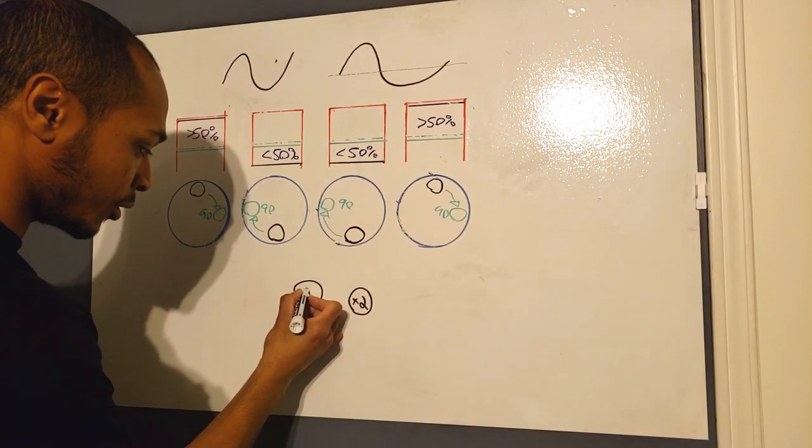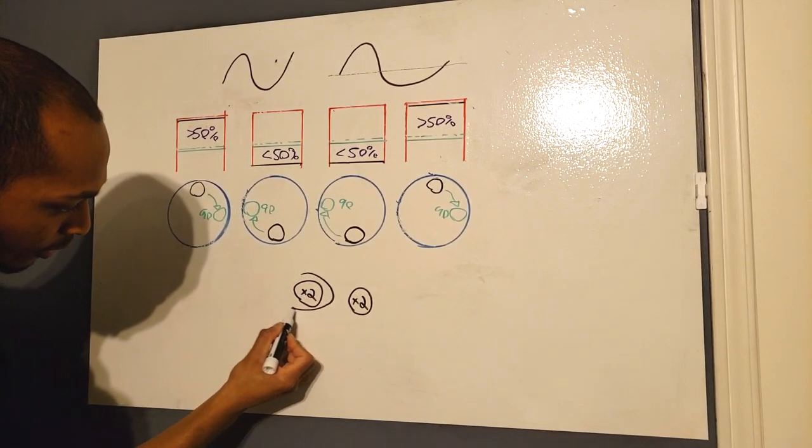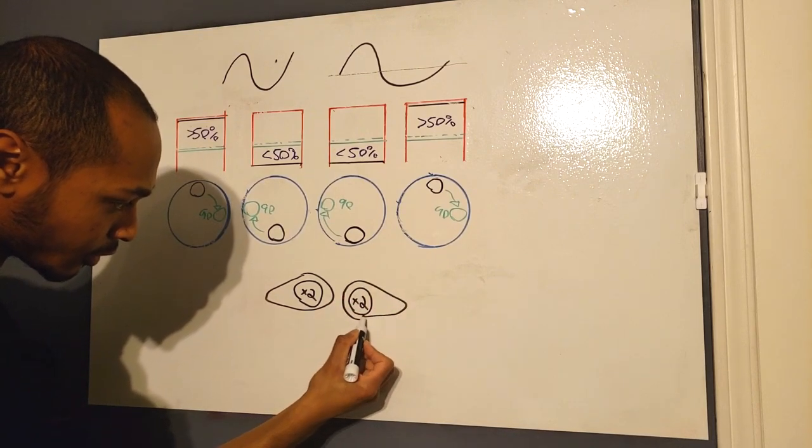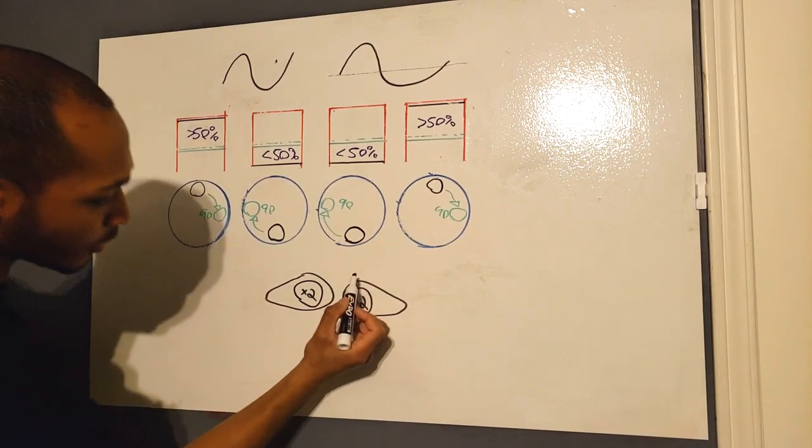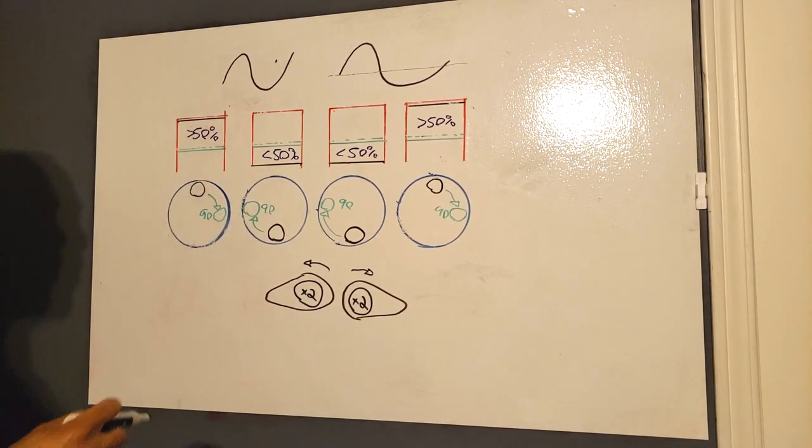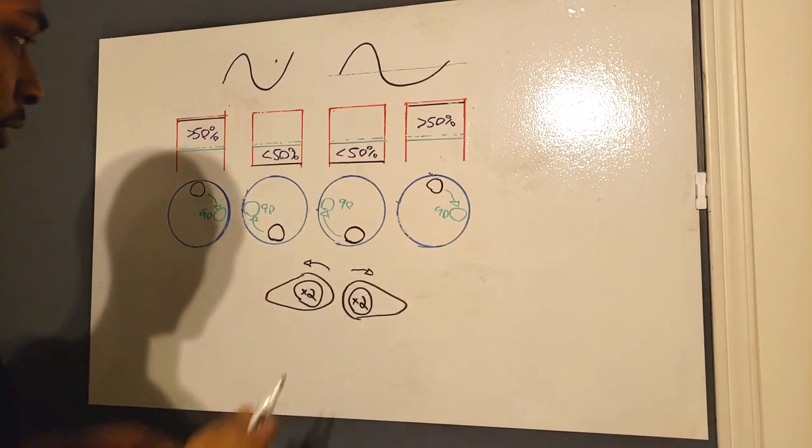So these are shafts that spin at twice the speed of the crank. This is a really terrible drawing. They kind of look like camshafts, but they're not. They usually spin in opposite directions.